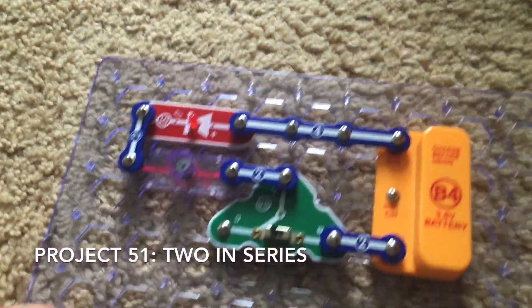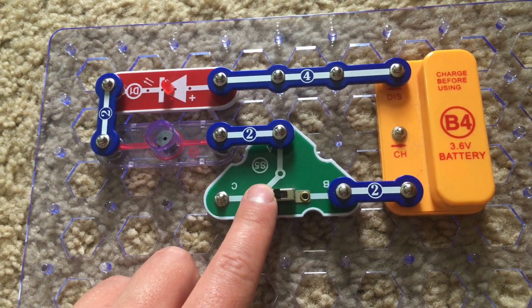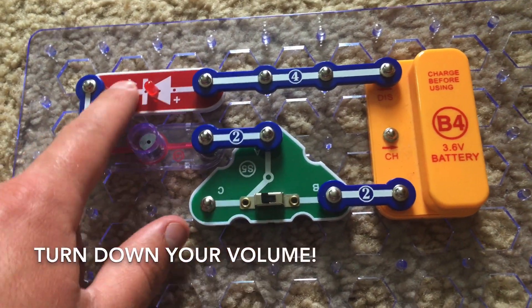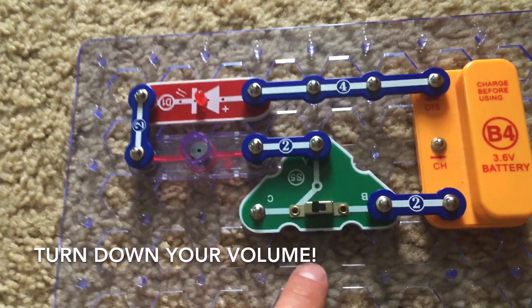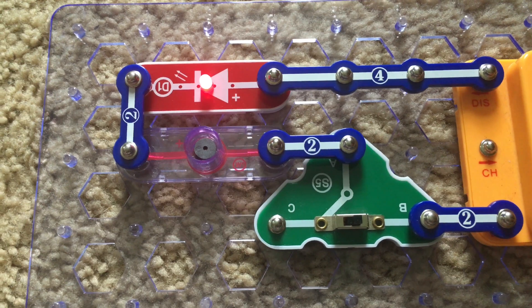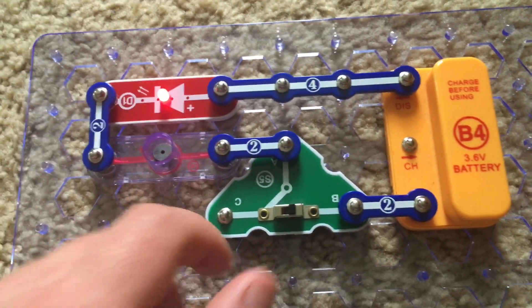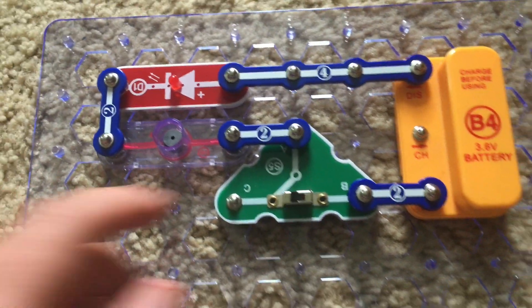For project 51, 2 in series, we're going to turn on the slide switch, move it to position B, and please turn down your volume because of the horn. And both components, the LED and horn, come on. And then turning off the slide switch turns them both off.